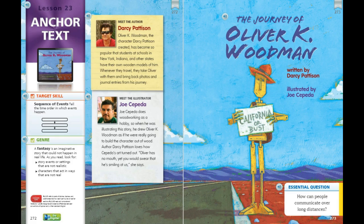Let's read our essential question on the bottom of page 273. It says, 'How can people communicate over long distances?' We're going to keep that in mind as we read The Journey of Oliver K. Woodman. Now, before you pause your video, I'd like you to do three things. I'm going to pause it in just a second.